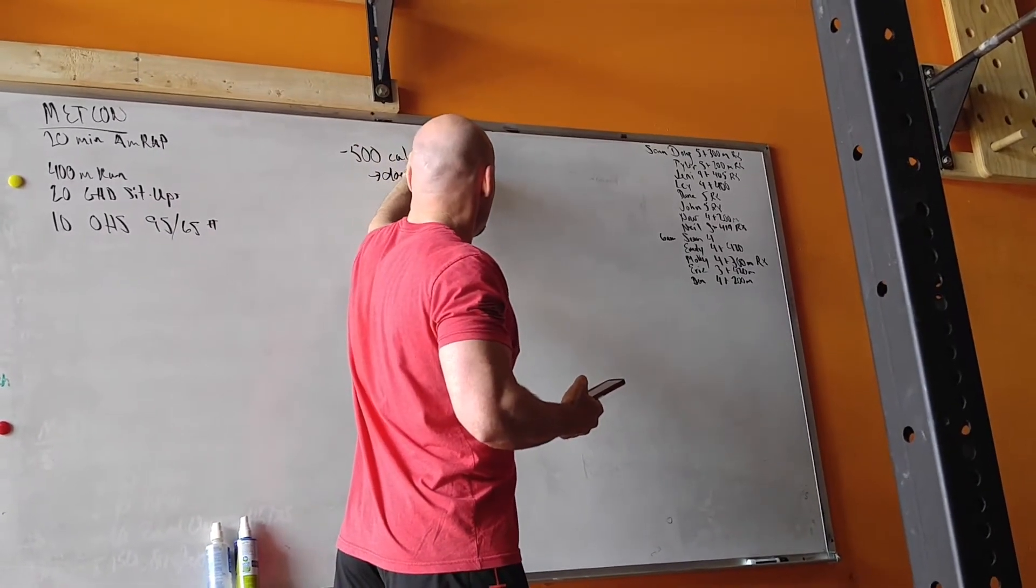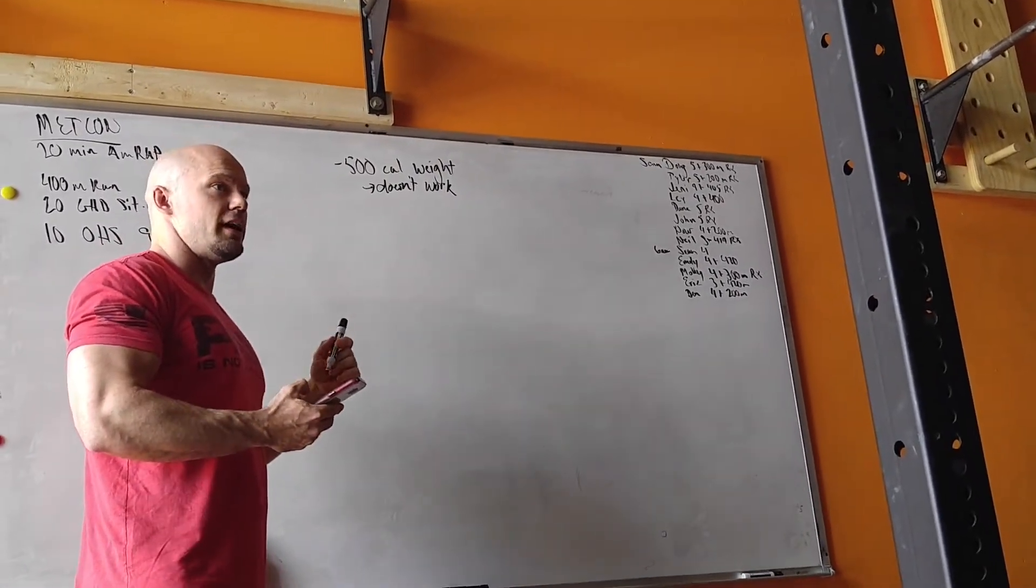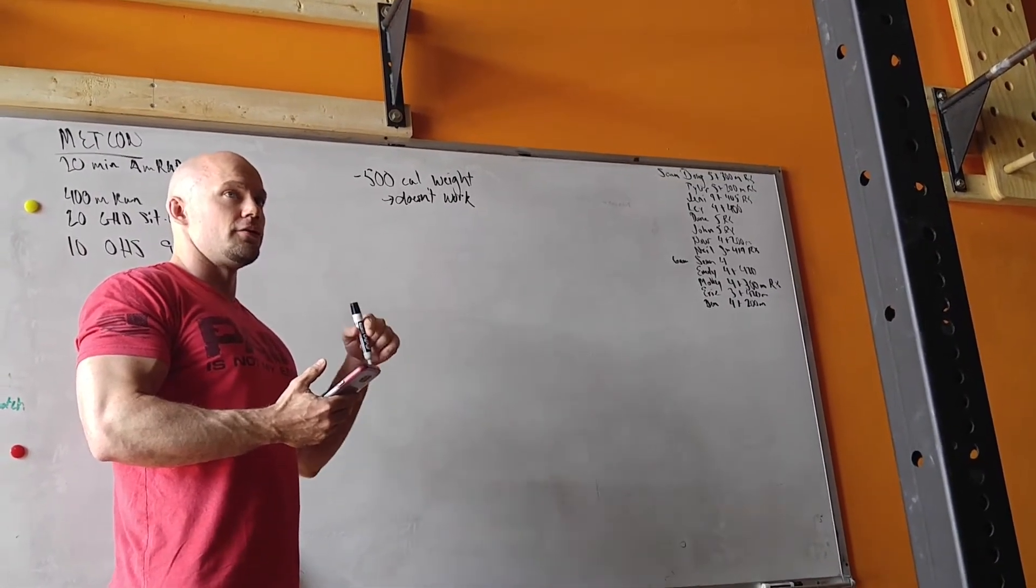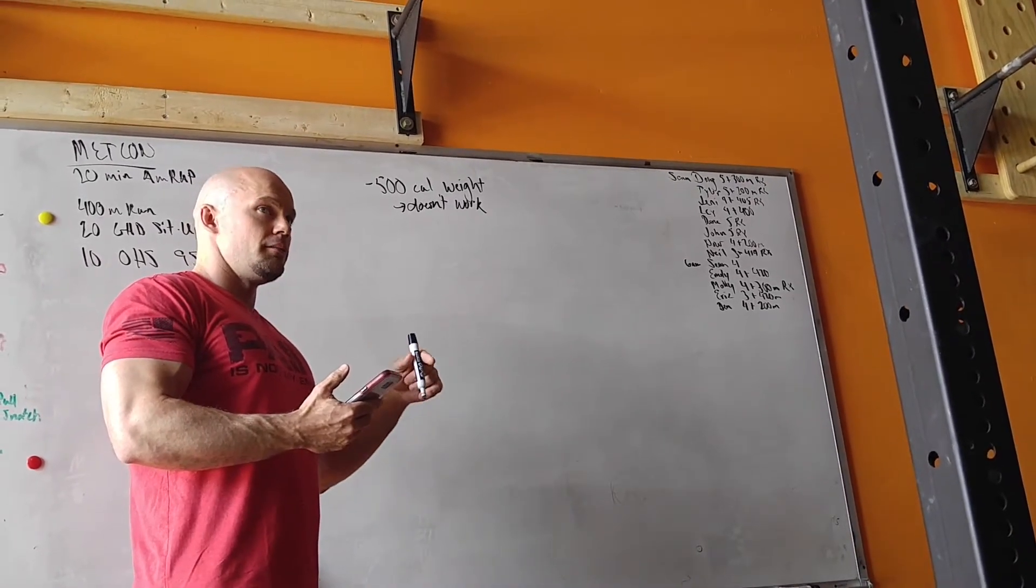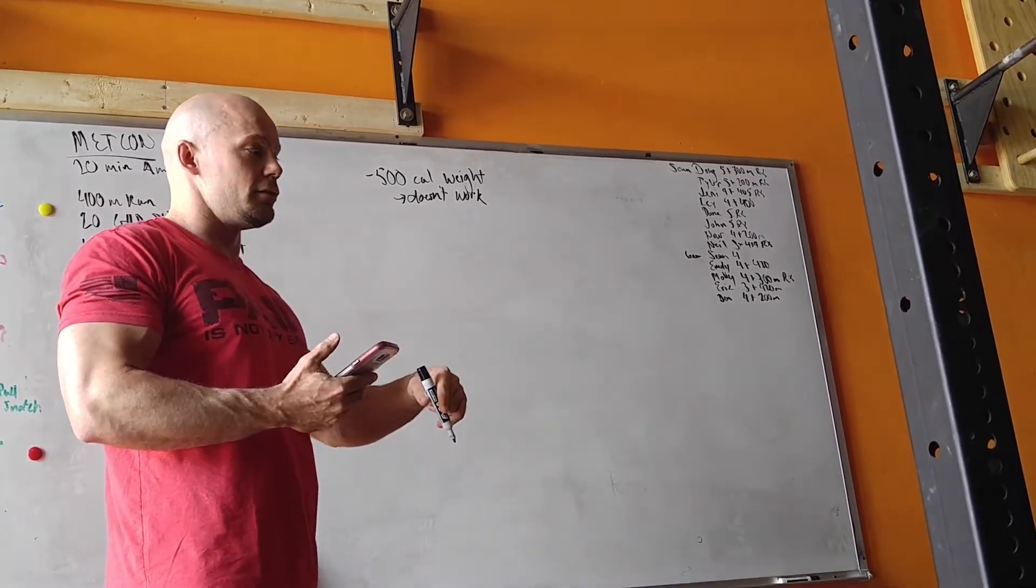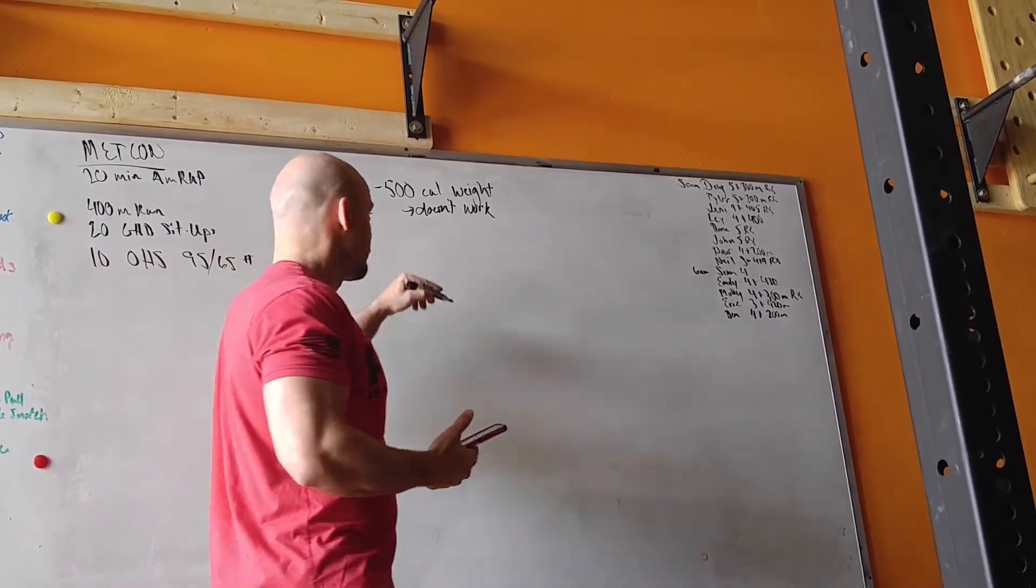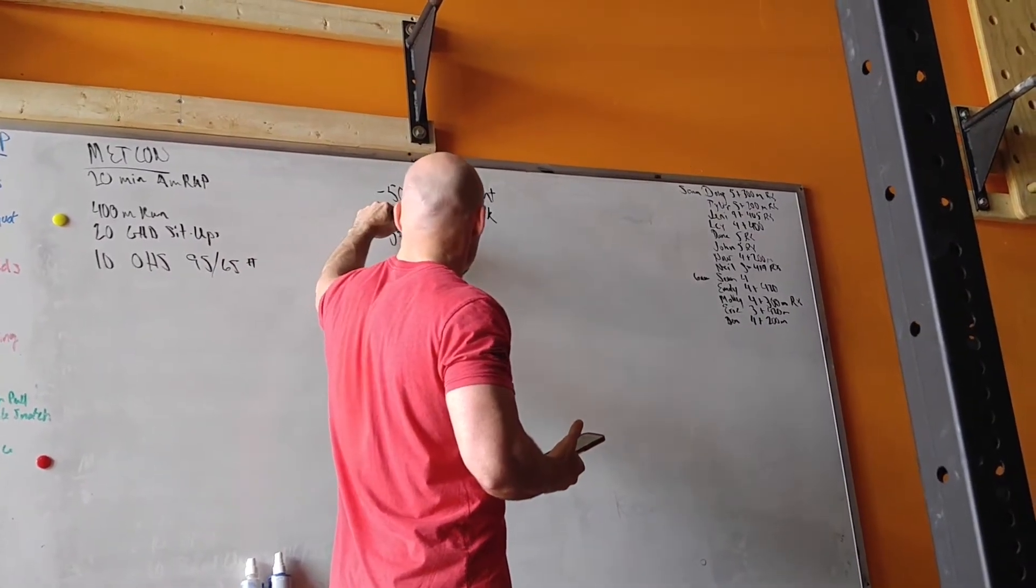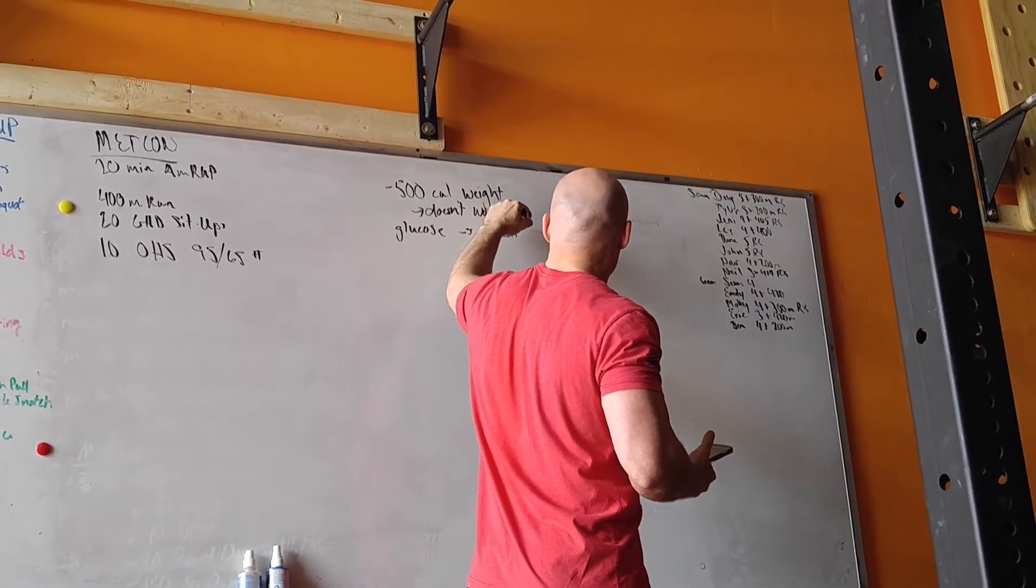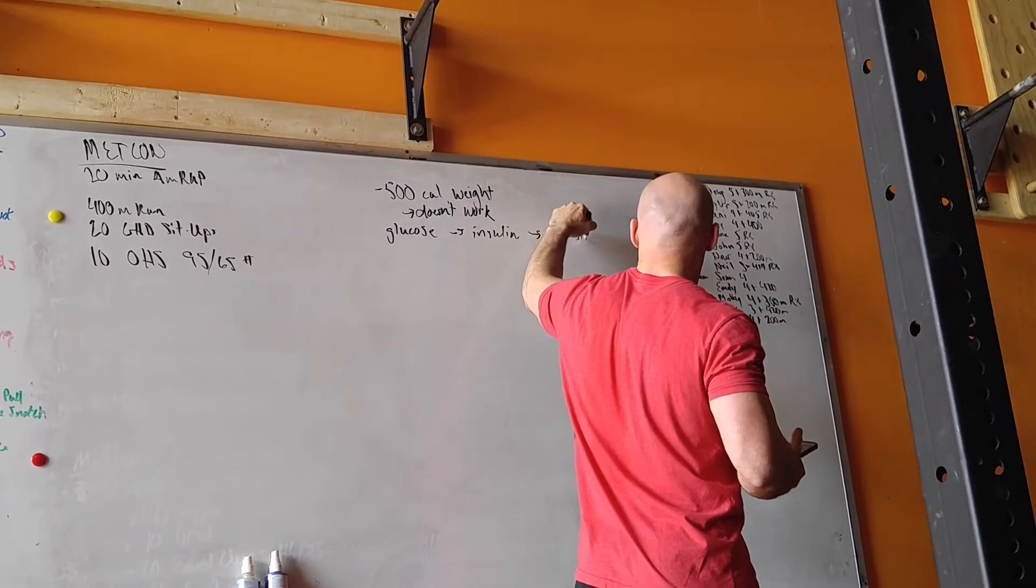This goes back to real metabolic physiology, not pseudoscience. How do we store fat? Just repeat what you said earlier. Insulin. Glucose goes in the bloodstream. Pancreas produces insulin. Insulin binds to the fat molecule. Glucose from the bloodstream goes in the fat molecule. You get fatter. We're talking about glucose, insulin, fat storage.